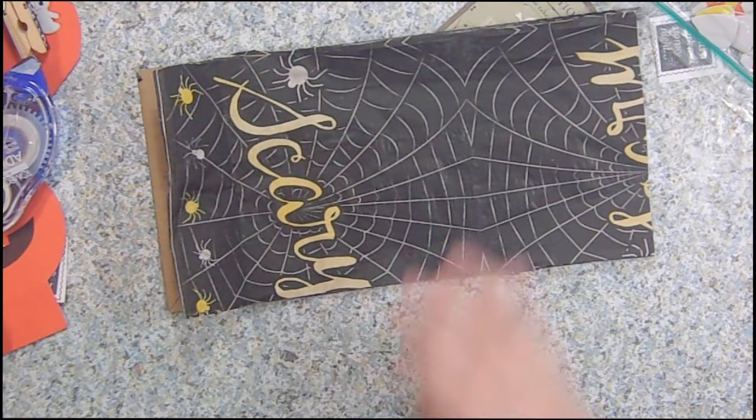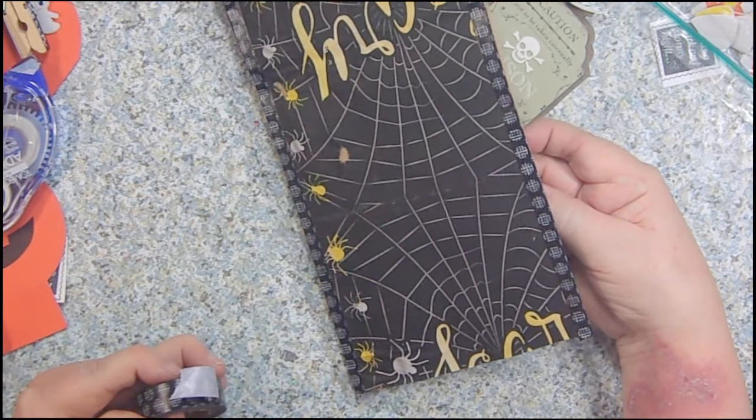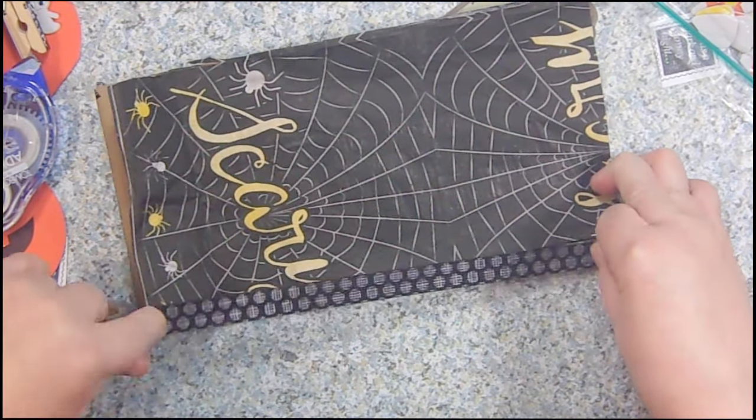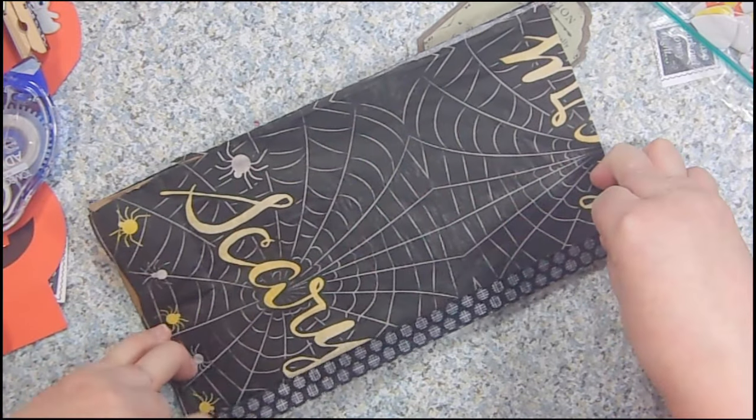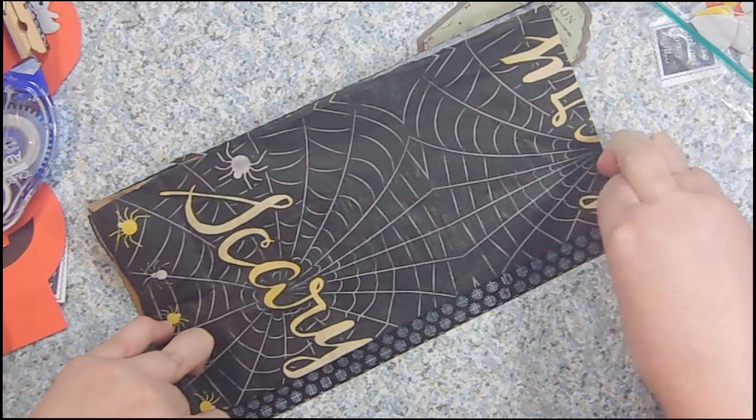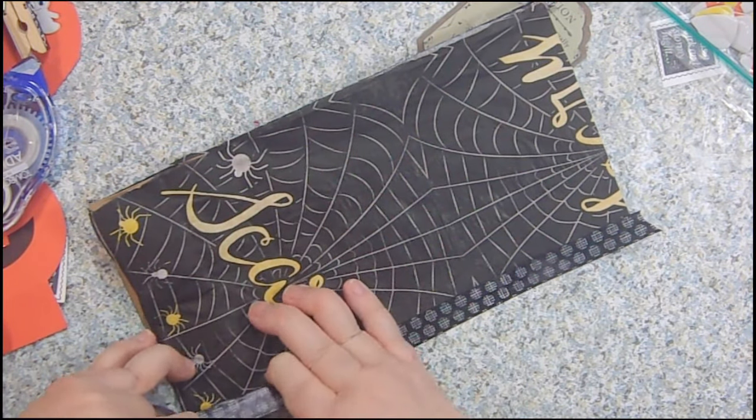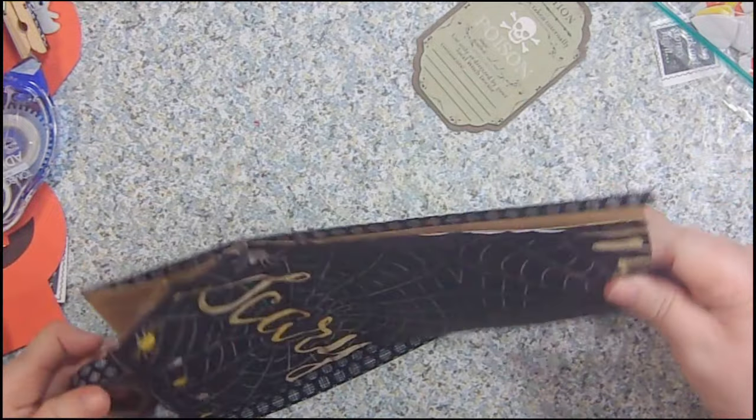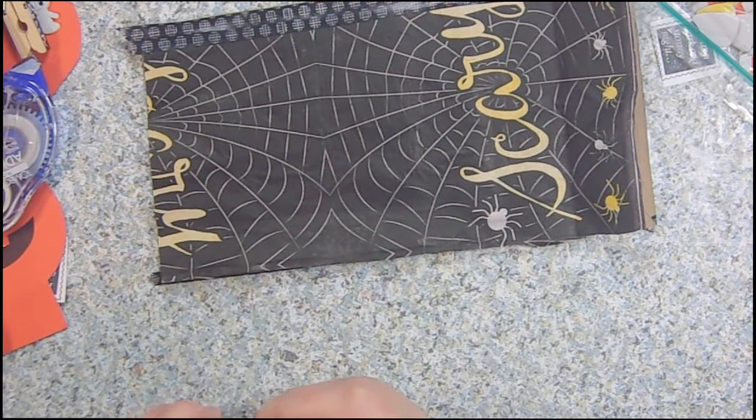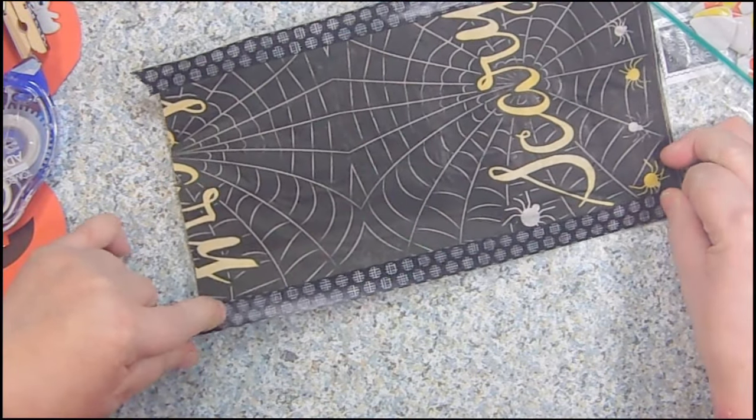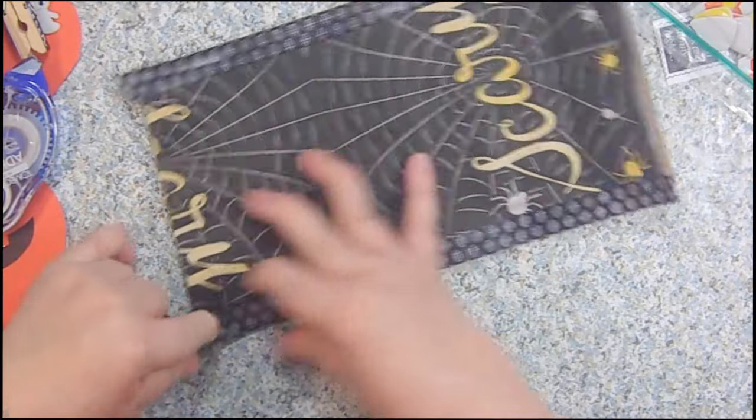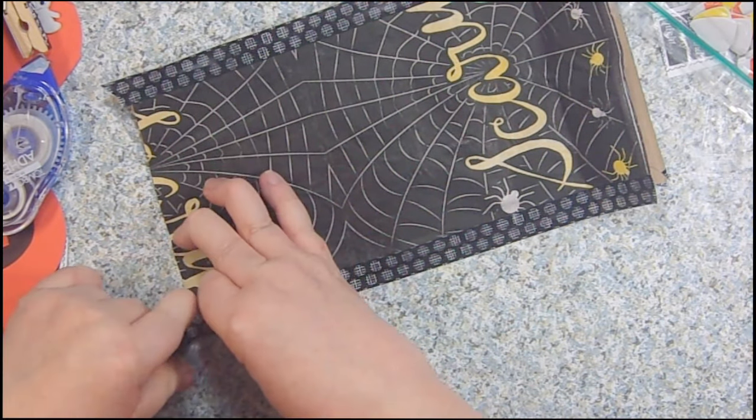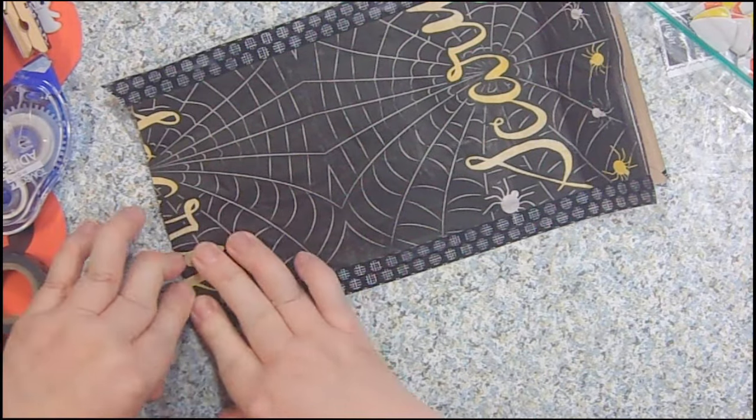To do the washi tape on the edges, I did this side already because the S was way off to the right. This side, the Y is way off to the right, but I'm going to try and only get a little bit of that Y. You're going to put your washi tape right up to the edge. You want to have enough of it on both sides so it stays. Go all the way to the bottom, and then I push mine down really well onto my mat.